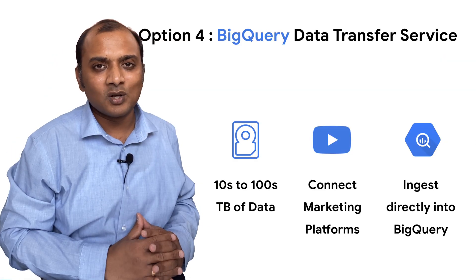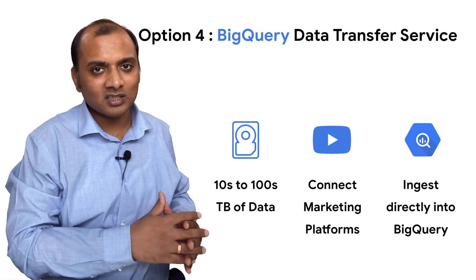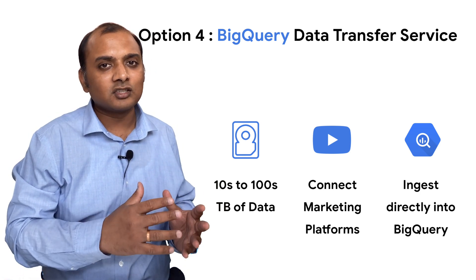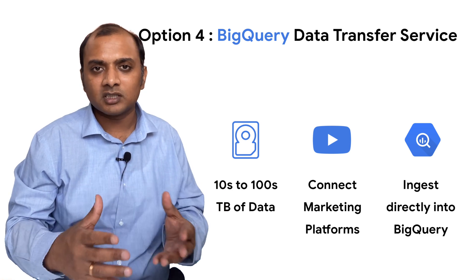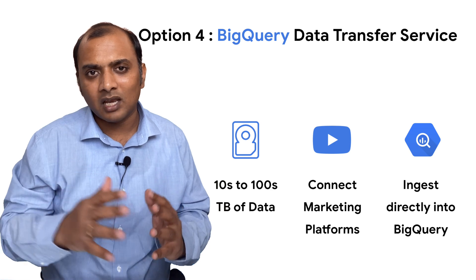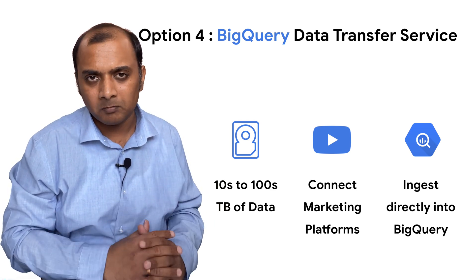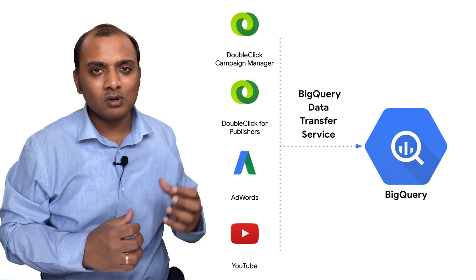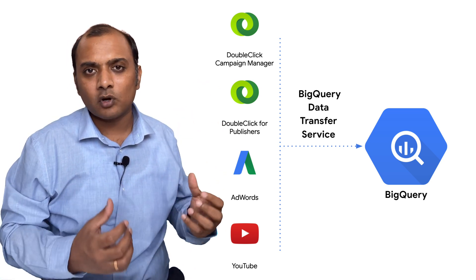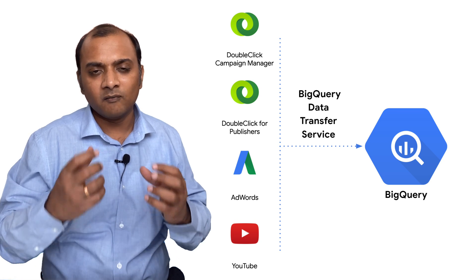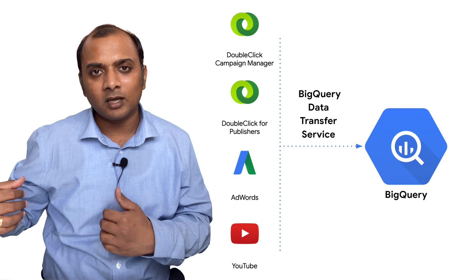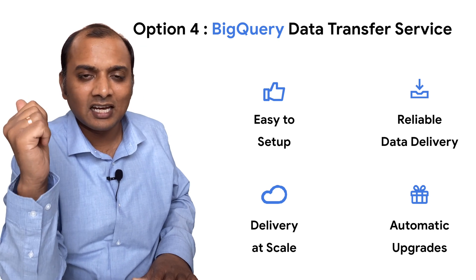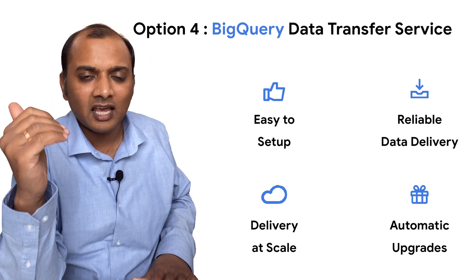Your next option is to leverage BigQuery Transfer Service. Similar to the Storage Transfer Service, you can ingest up to hundreds of terabytes, but instead of ingesting into Google Cloud Storage, you're ingesting directly into BigQuery — a fully managed global data warehouse on Google Cloud. It is ideal if you want to ingest data from Google marketing platform products like Google Ads, DoubleClick, YouTube Ads, and so on. BigQuery Transfer Service is easy to set up, provides reliable data delivery at scale, and offers automatic upgrades to connectors when your source system upgrades.